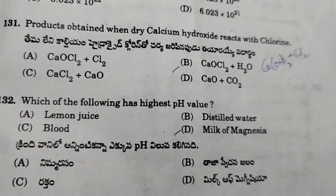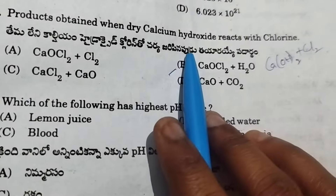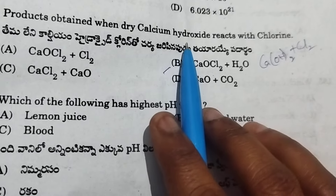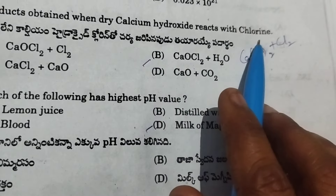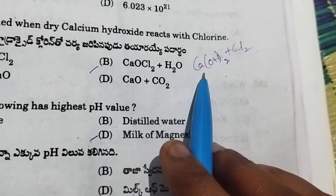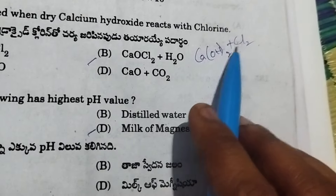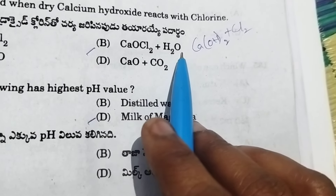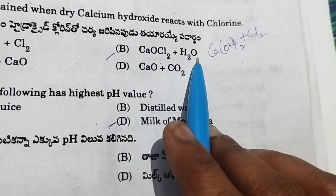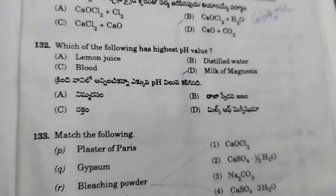Next: products obtained when dry calcium hydroxide reacts with chlorine — calcium hydroxide reacts with chlorine to form calcium oxychloride (bleaching powder) plus water. Option B is correct.